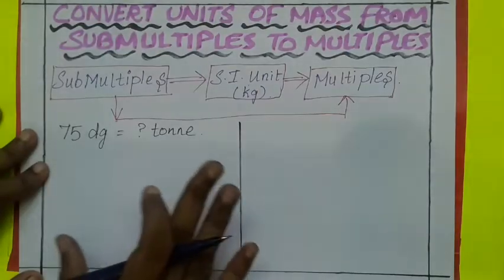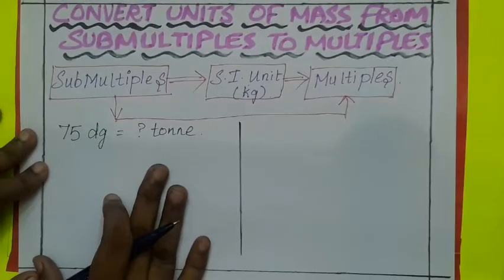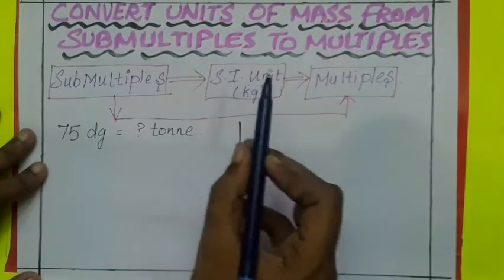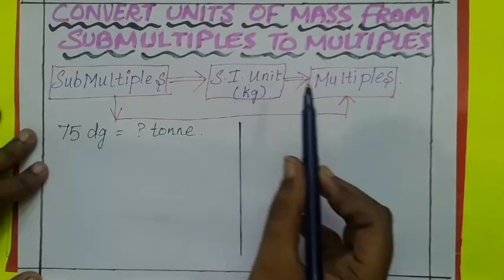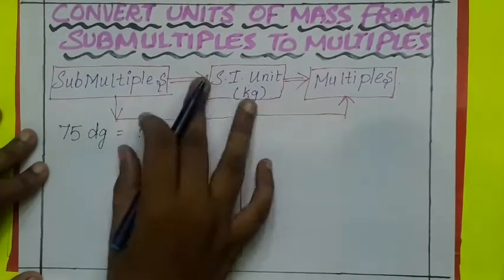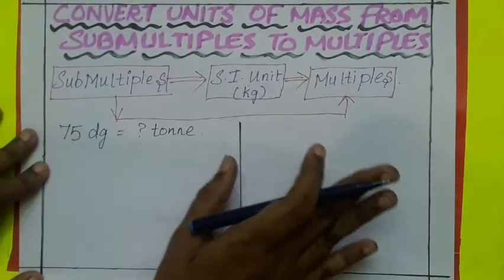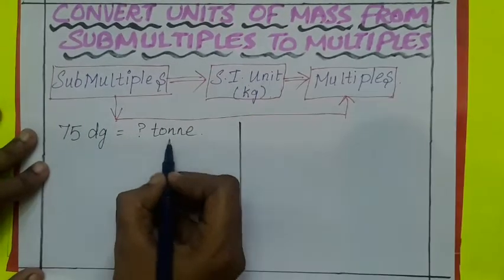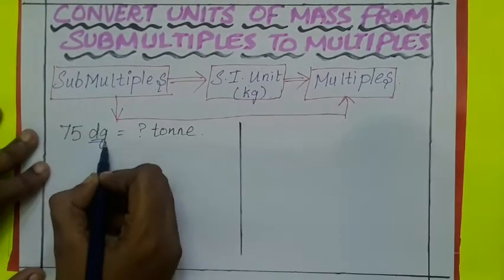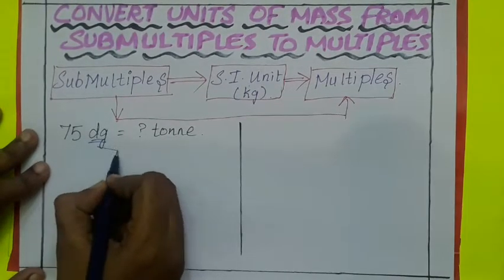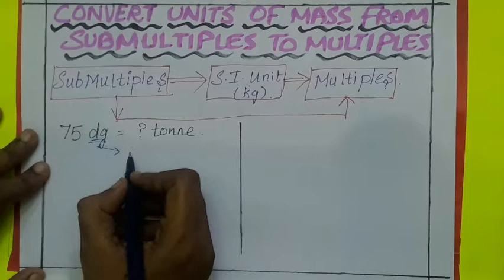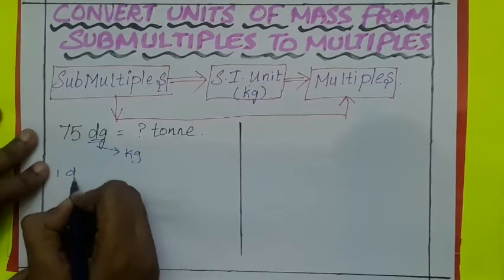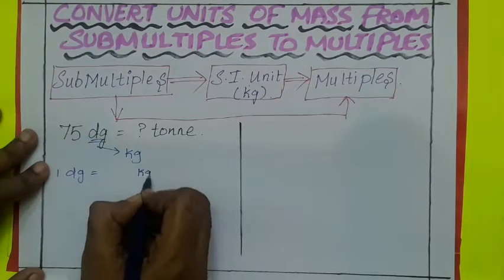Same steps what we followed in previous sum, we are going to follow here. Convert units of submultiples into SI unit. Then convert SI unit into units of multiples. And multiply both the answers, you will arrive a formula. Here 75 decigram is equal to how many ton? Decigram is submultiples. From submultiples we are going to convert it into SI unit kilogram. So 1 decigram is equal to how many kilograms?